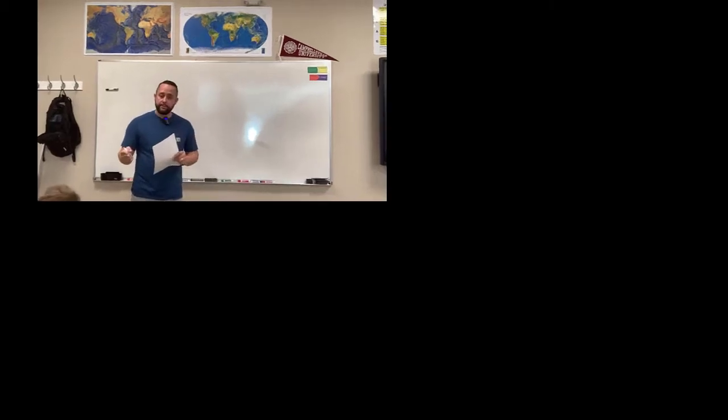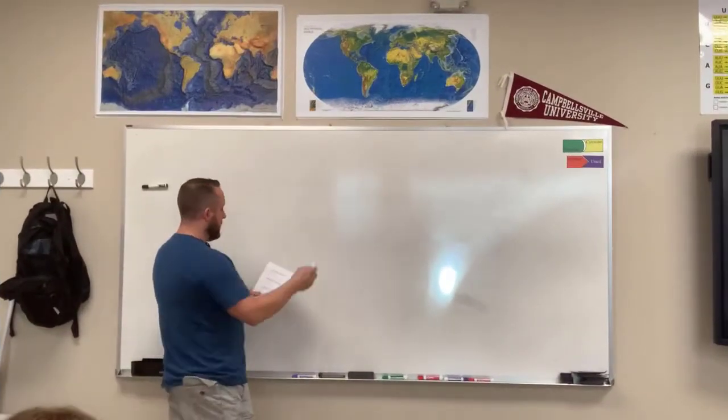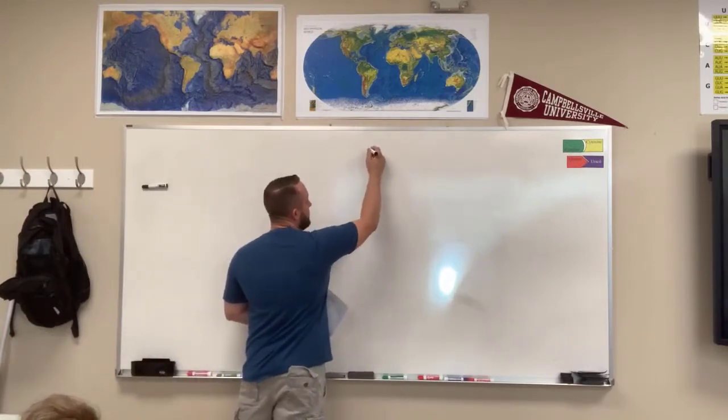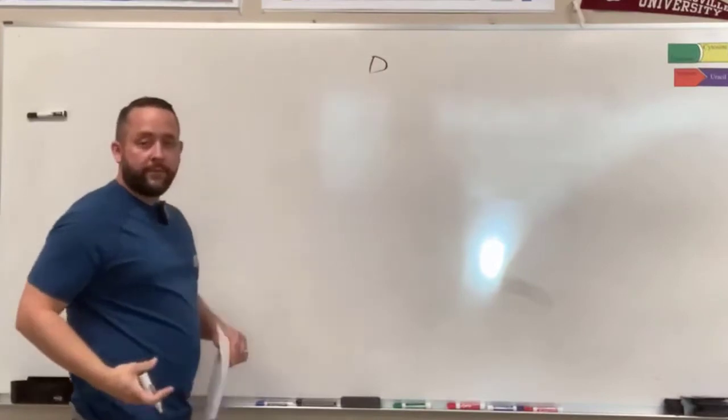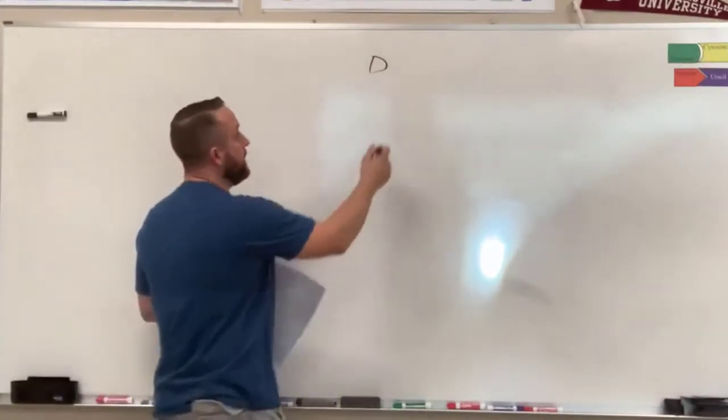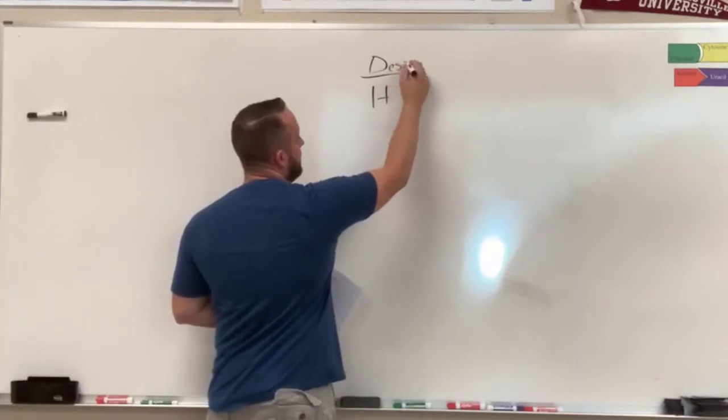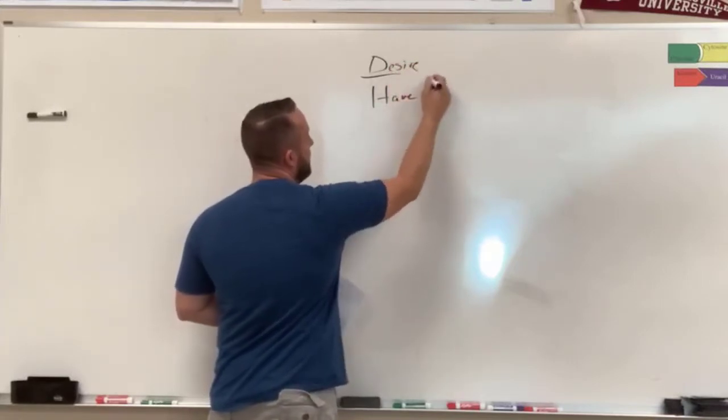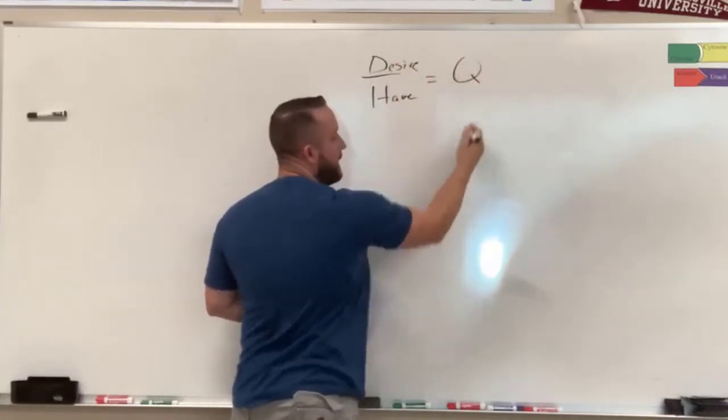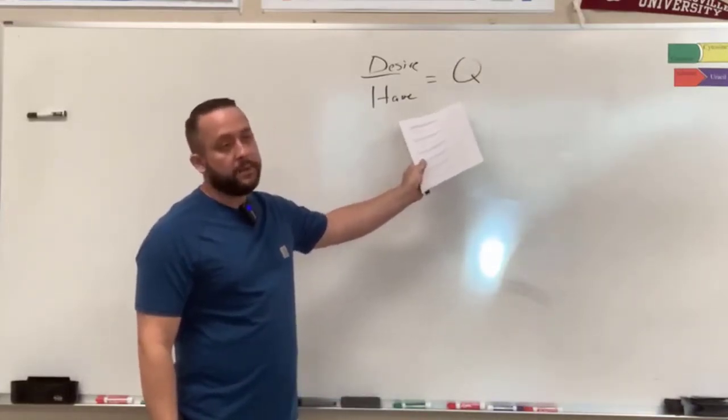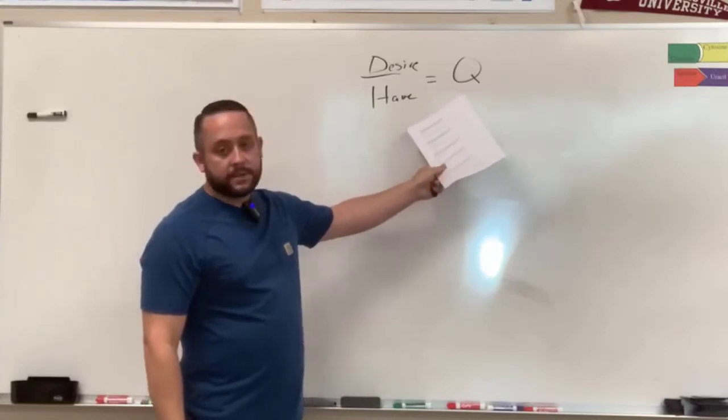Let's set this up in a way for a more complicated problem. One of the first things we can utilize in our tool belt on figuring out these problems is a formula: Desire over Have times Quantity. This is always going to be quantity of whatever it is - it could be mls, it could be tablets, it could be pills, it could be drops.